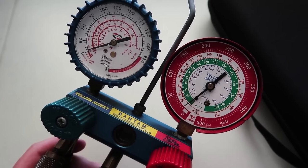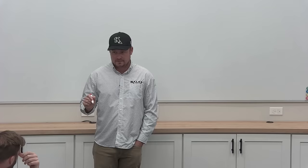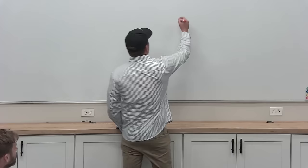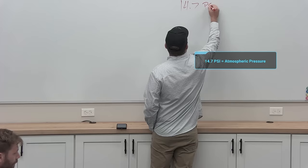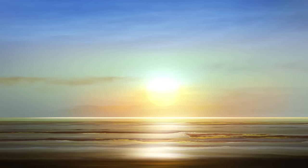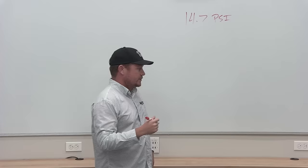So how do you take gauge pressure and convert it to absolute pressure? You add atmospheric pressure — 14.7. What does 14.7 represent? Atmospheric pressure. That is the pressure we see at sea level. We're sitting at the bottom of an ocean of air stacked on top of us — that's 14.7 PSI exerted.